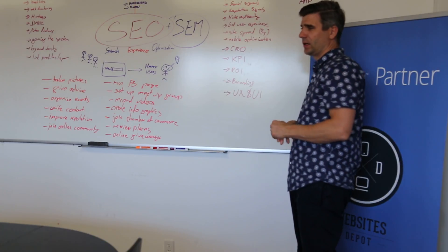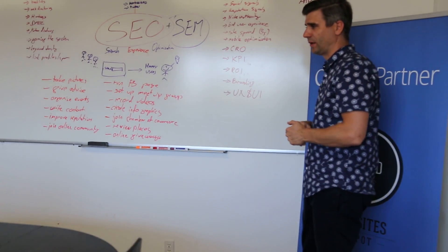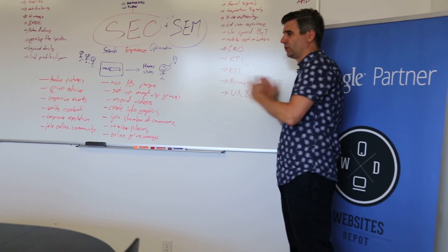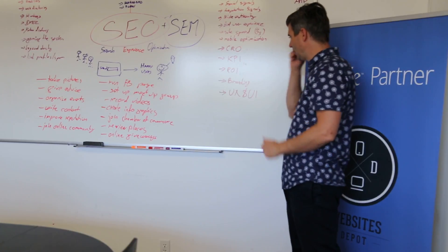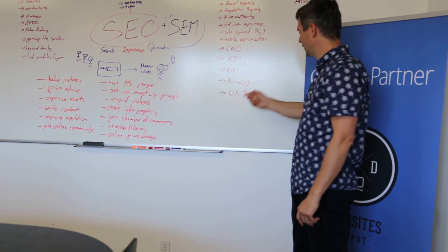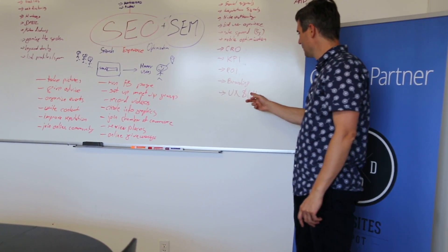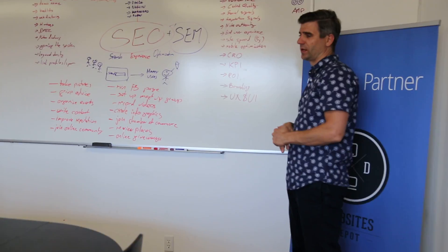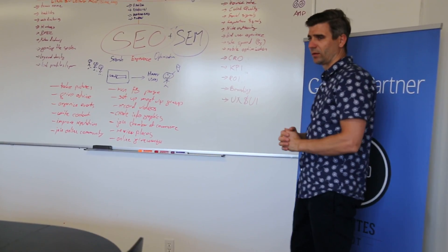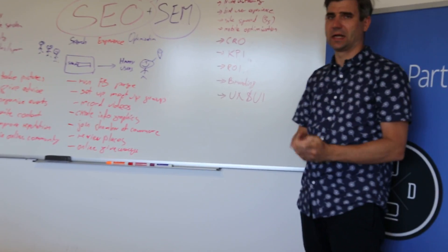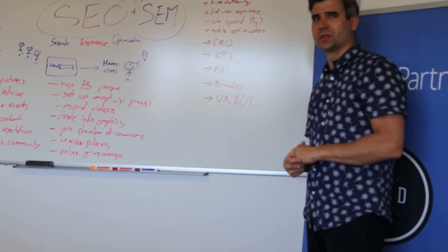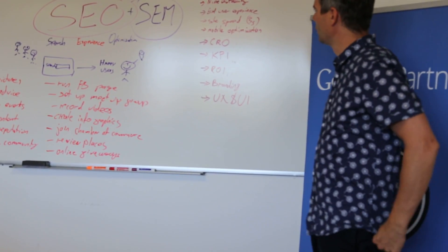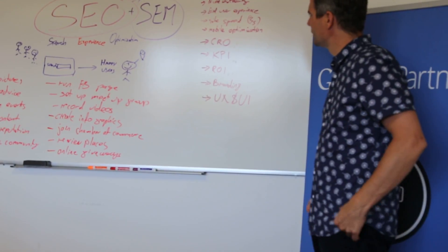ROI is return on investment — like how much it's worth for me to throw money into the marketing. UX is user experience and UI is user interface, like apps and stuff like that, how users interact with your applications.